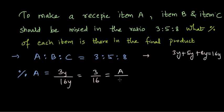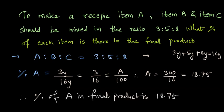I'll just write variable A divided by 100. 16 parts which are total parts correspond to 100%, so what is 3 out of 16? This gives me A is equal to 300 divided by 16 after cross multiplication, and this is equal to 18.75, and therefore percentage of A in final product is 18.75%.